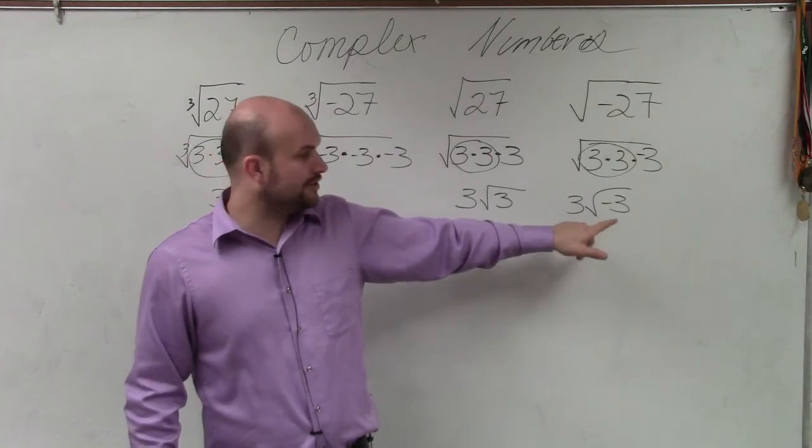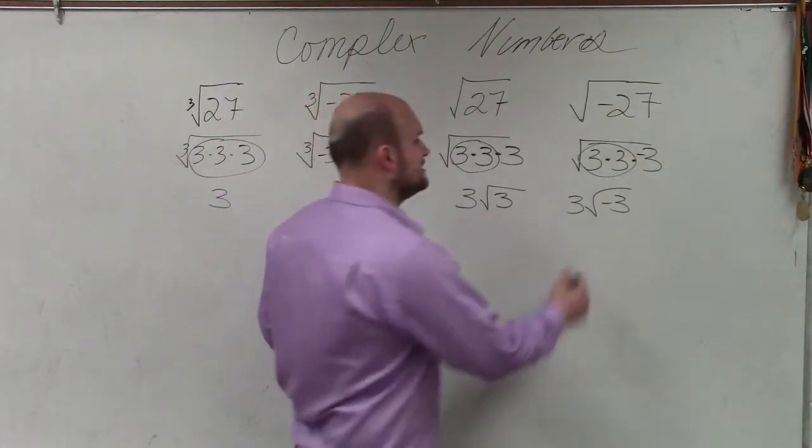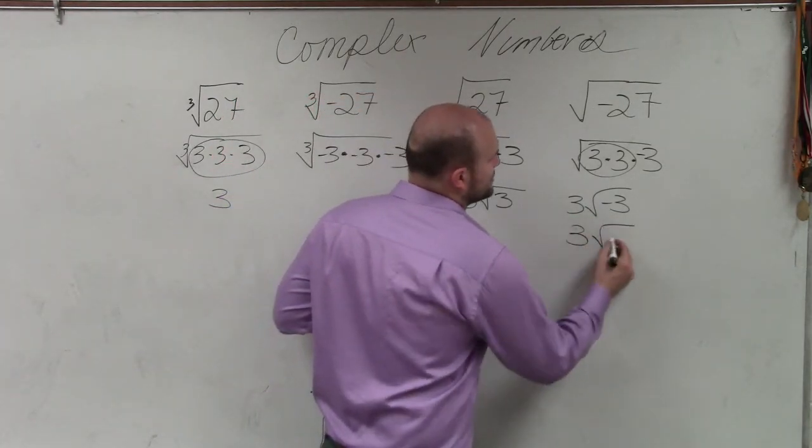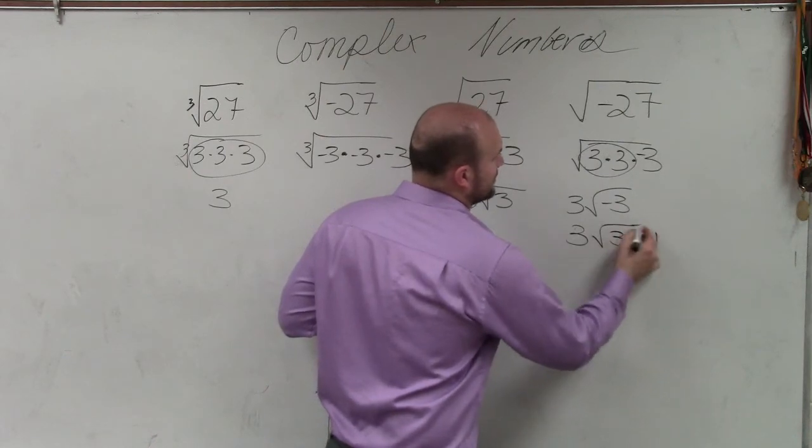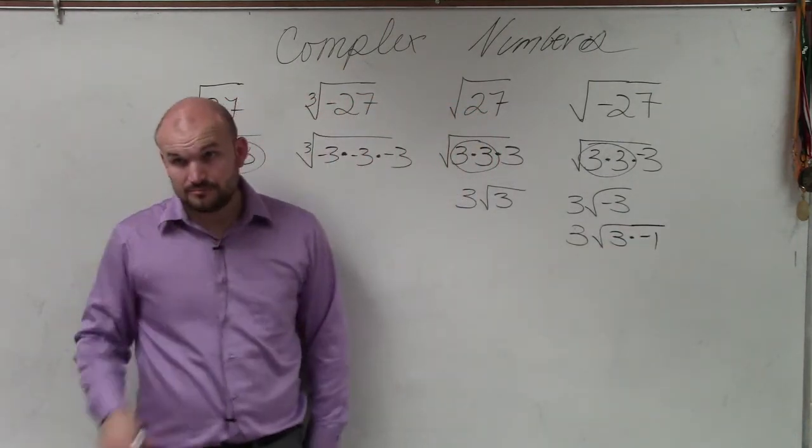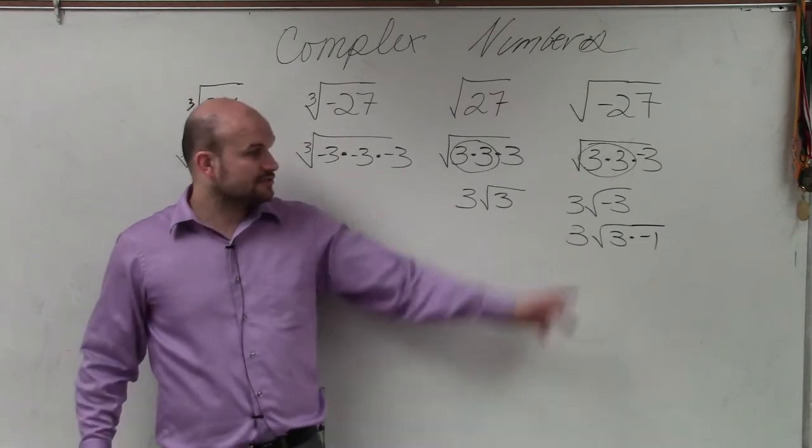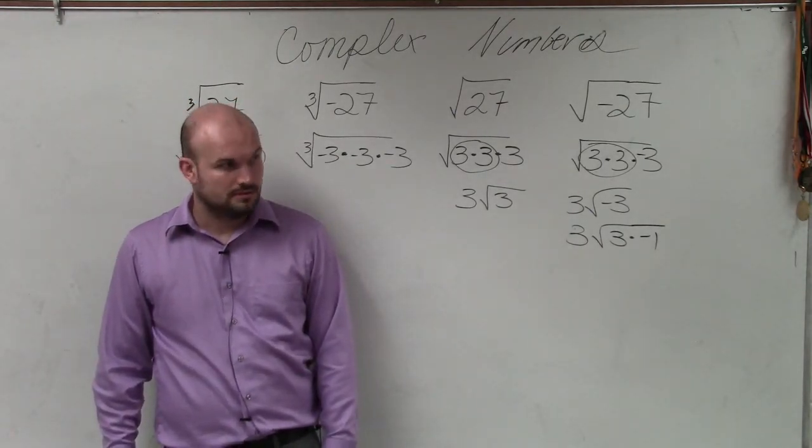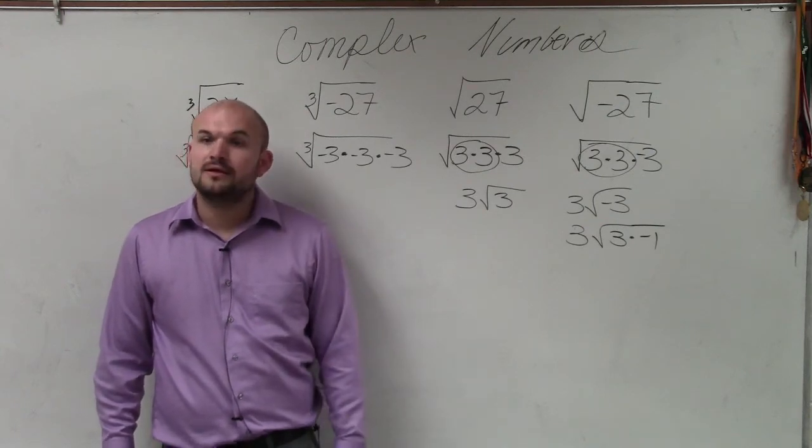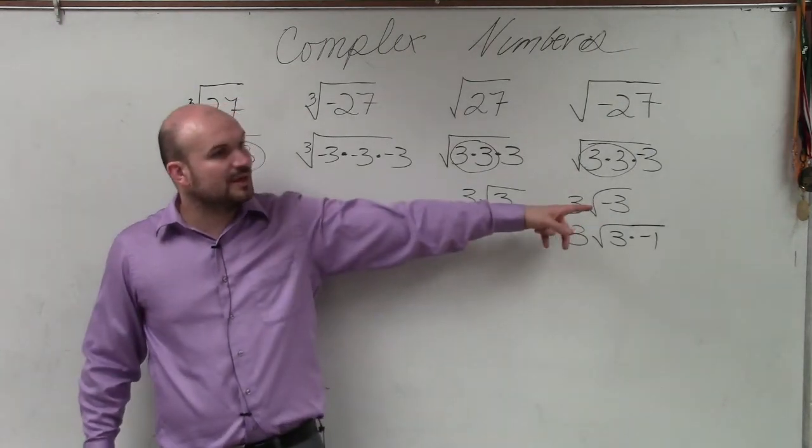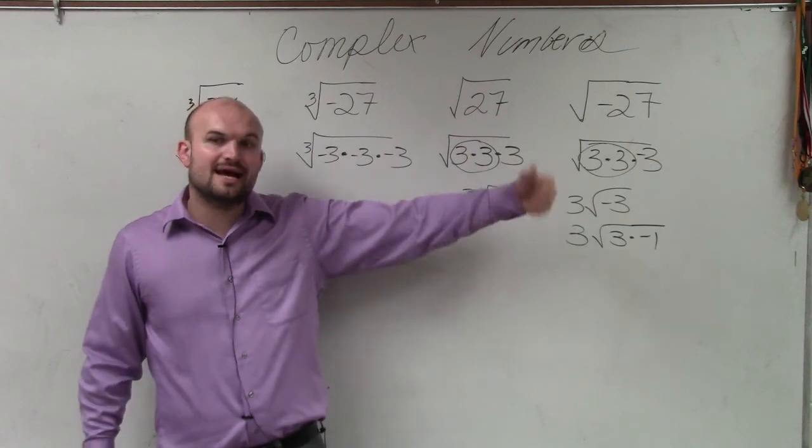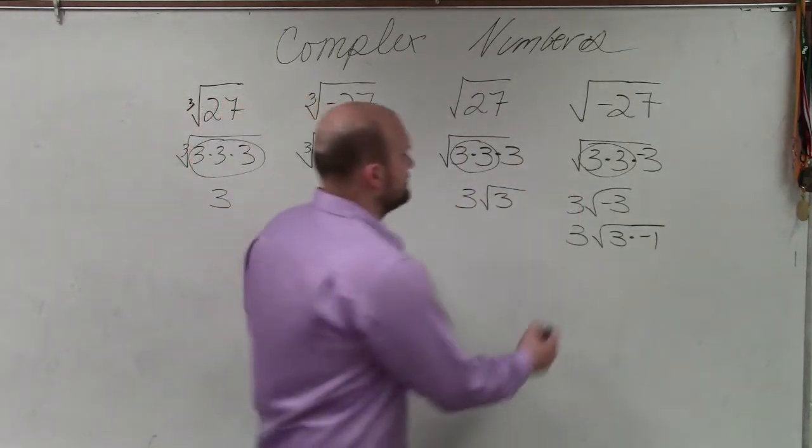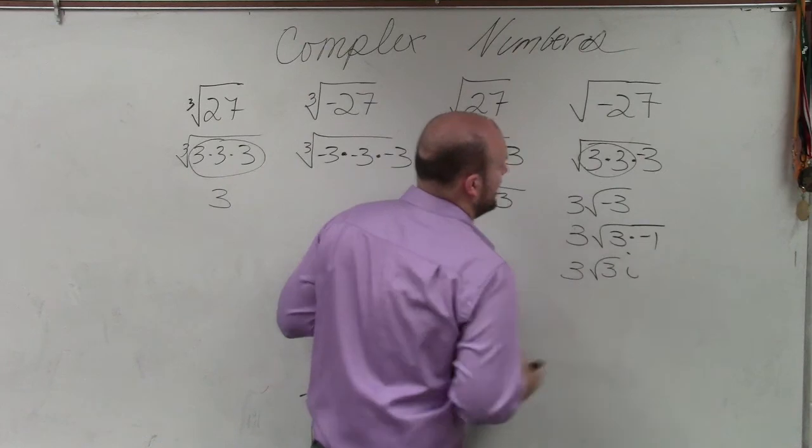So what we're going to do is rewrite this as 3 times the square root of 3 times negative 1. Does 3 times negative 1 equal negative 3? So what we do is rewrite the negative 1, the square root of negative 1, as our imaginary unit i. So it's 3 square root of 3 i.